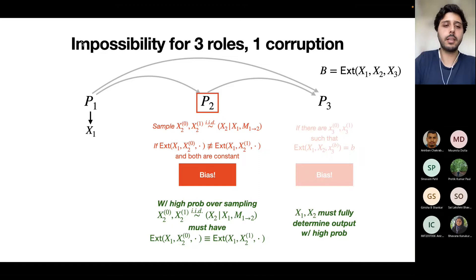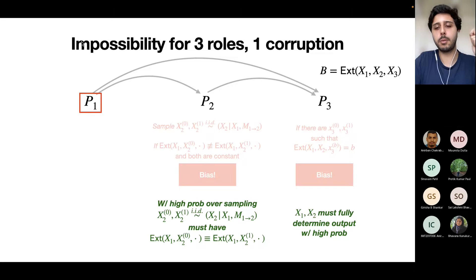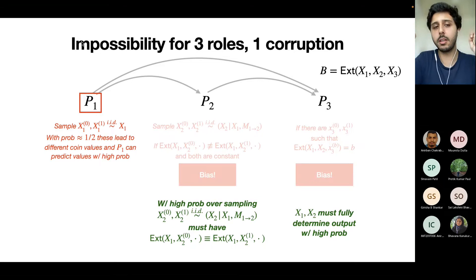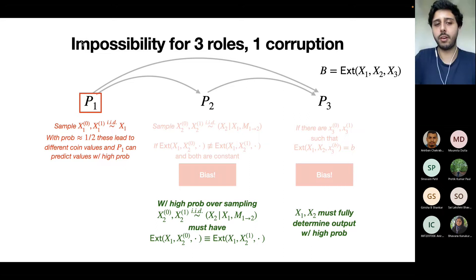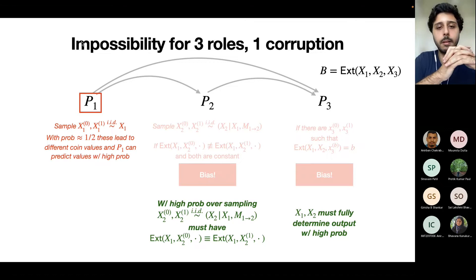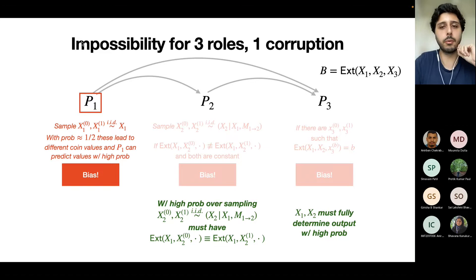But now we have a problem with P1. Because of these properties, if P1 simulates two honest runs in its head, it can accurately predict the final coin with high probability. And since this is a correct coin tossing protocol, with probability close to one half the two runs lead to different coin values. So P1 can choose its favorite run — the one leading to 0 with high probability — and bias the coin. We have no escape, and this proves it's impossible to toss a coin with just three roles and one corruption.